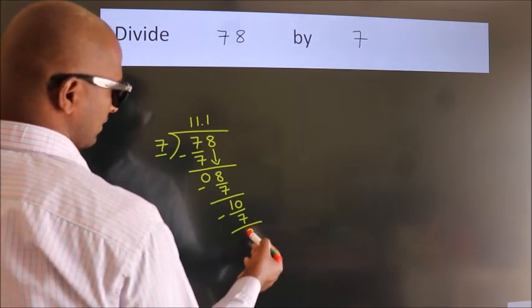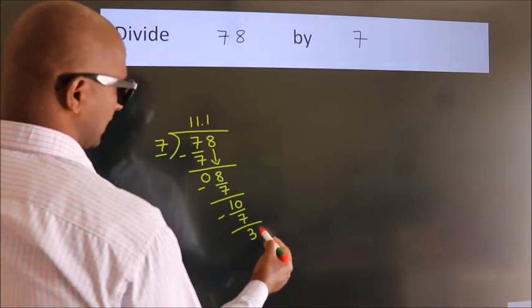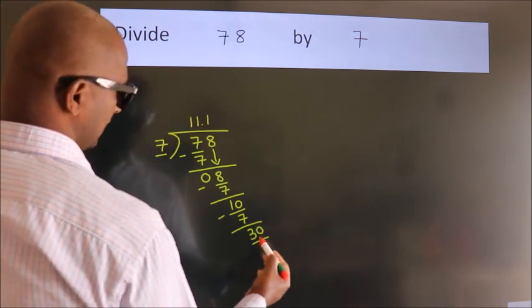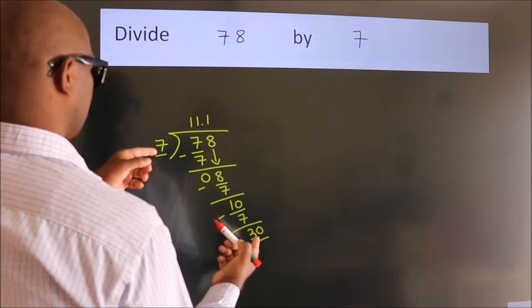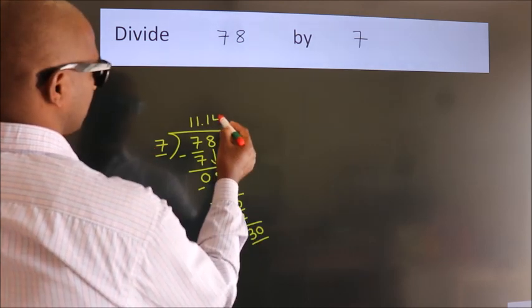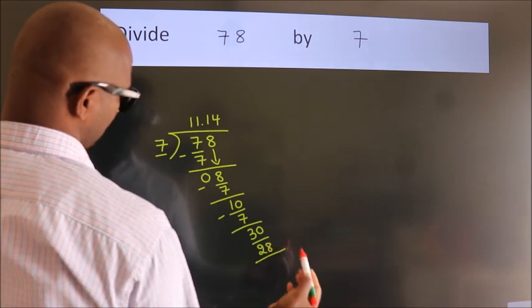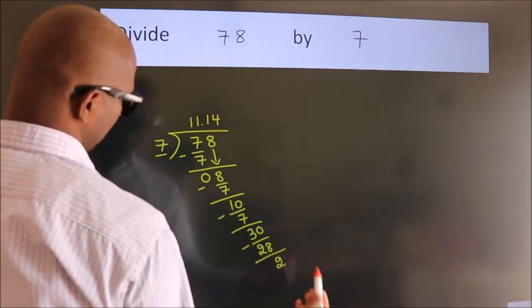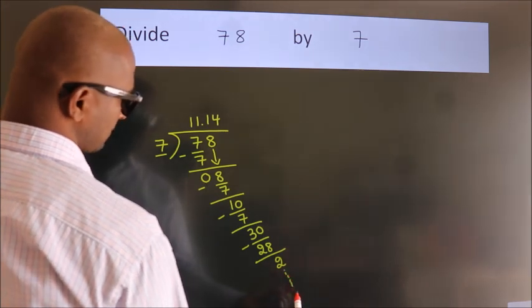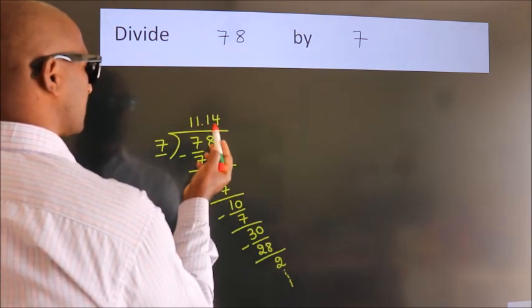After this, we already have the decimal. So directly take 0. So 30. A number close to 30 in 7 table is 7 fours, 28. Now we subtract. We get 2. And the division continues. It is enough if we do up to 2 decimal places.